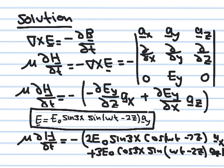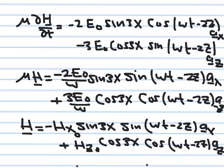So mu_0 * ∂H/∂t has two components: one in x and one in z. The next step is to integrate both components with respect to time. Integrating the cosine term in t gives sine divided by omega: the x-component becomes (2*E0 / omega) * sin(3x) * sin(omega*t − 2z). Integrating the sine term gives minus cosine divided by omega, but the minus signs cancel, so the z-component becomes (3*E0 / omega) * cos(3x) * cos(omega*t − 2z).